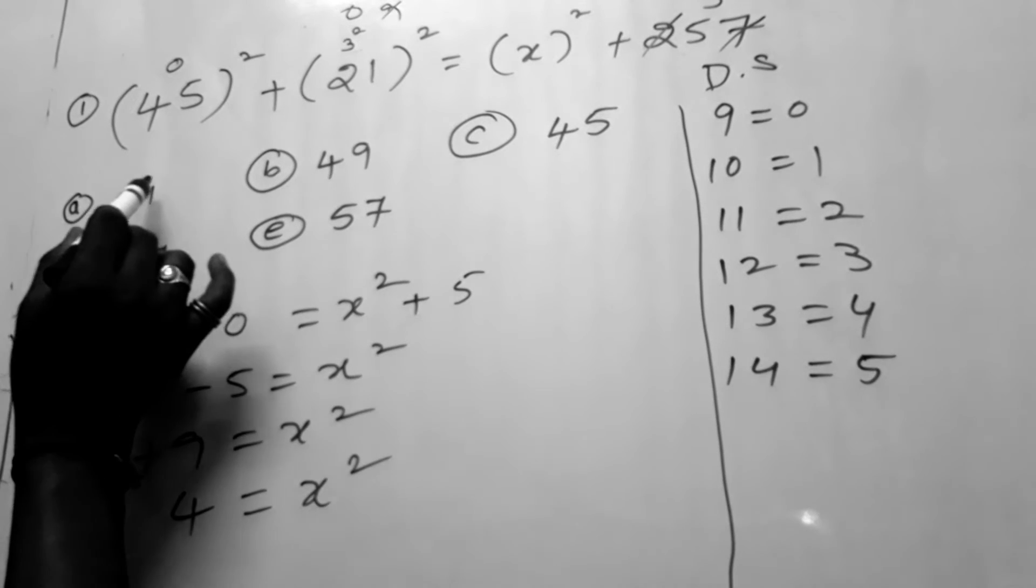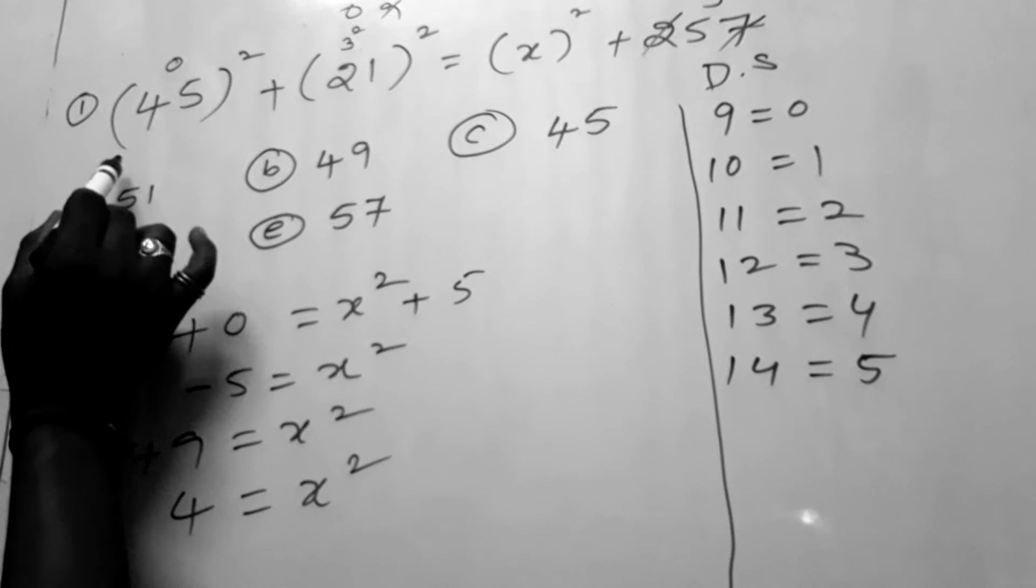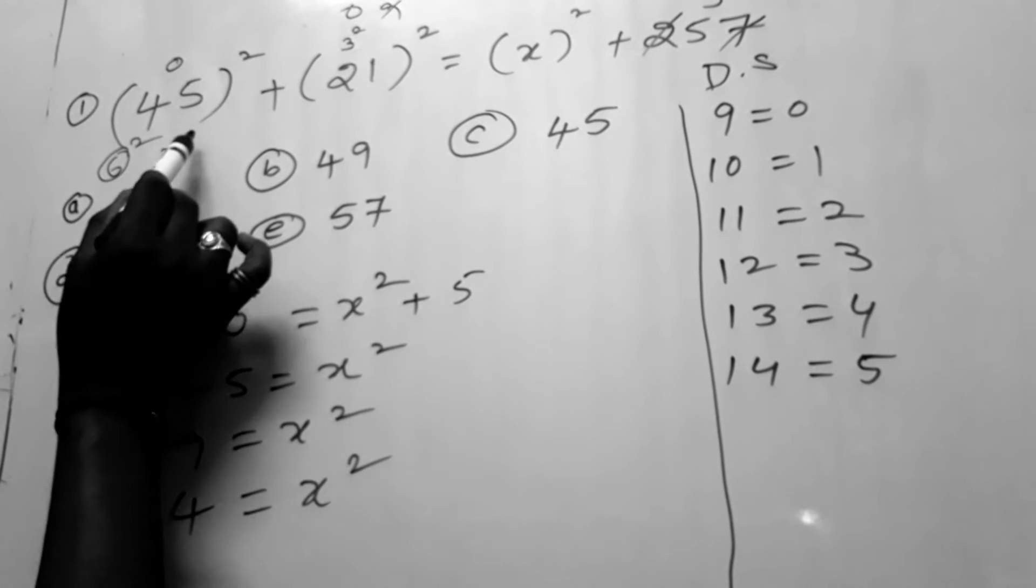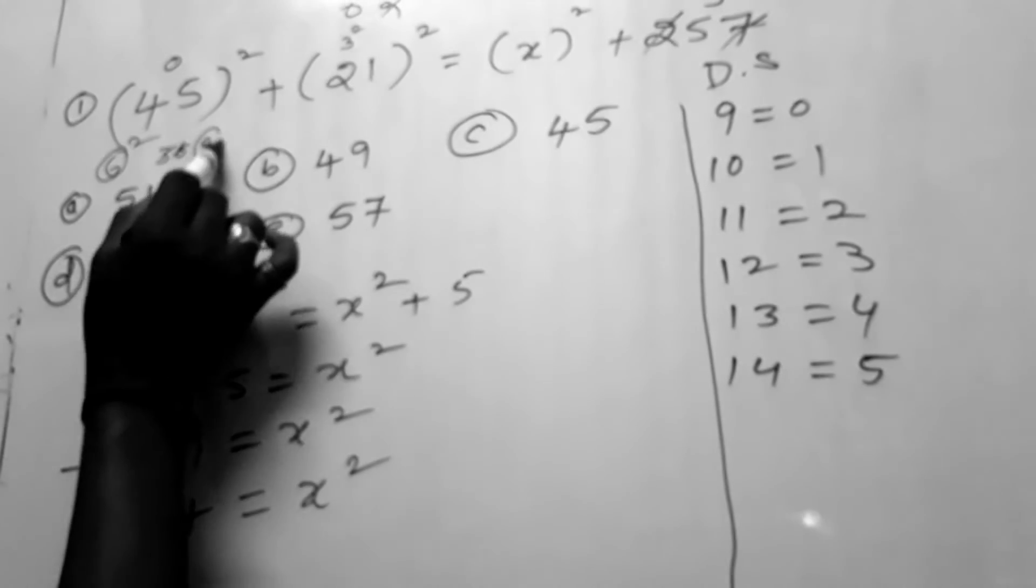First one, 5 plus 1 is 6. 6 square is 36, which means 3 plus 6. That's 9, digital sum 9 is 0.